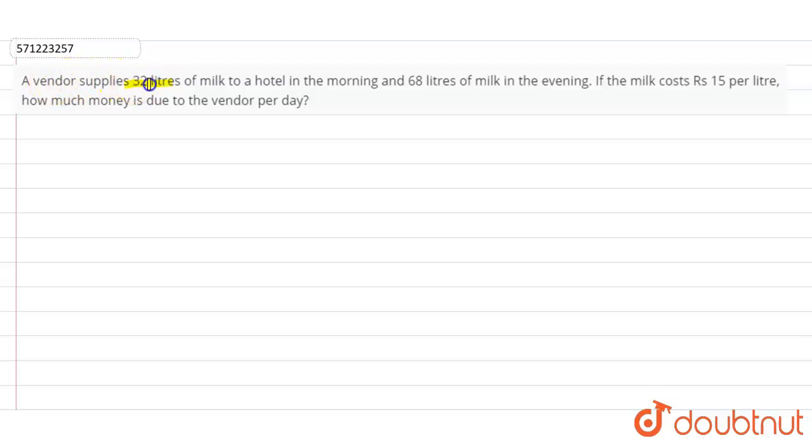Hi students, the question is: a vendor supplies 32 liters of milk to a hotel in the morning and 68 liters of milk in the evening. If the milk costs rupees 15 per liter, how much money is due to the vendor per day?